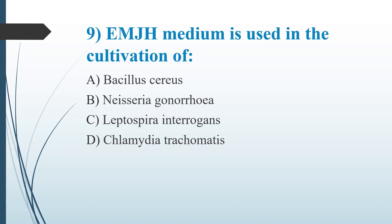Ninth question: EMJH medium is used in the cultivation of — Option A: Bacillus cereus. Option B: Neisseria gonorrhoeae. Option C: Leptospira interrogans. Option D: Chlamydia trachomatis. The answer is Option C, Leptospira interrogans. For Bacillus cereus, MYPA medium (mannitol yolk polymixin B agar) is the selective medium. For Neisseria gonorrhoeae, Thayer-Martin medium is used. Chlamydia trachomatis cannot be grown on conventional bacteriological medium — tissue culture and egg inoculation are the preferred methods.